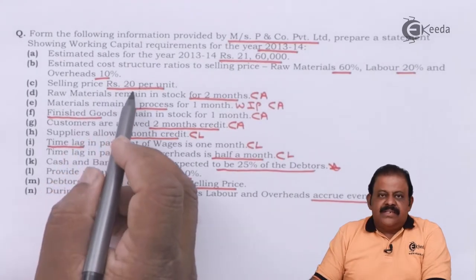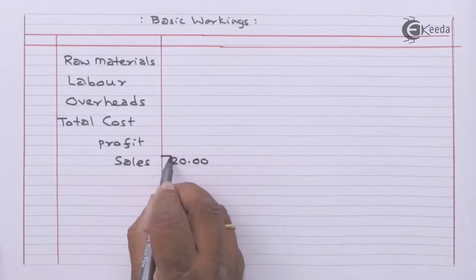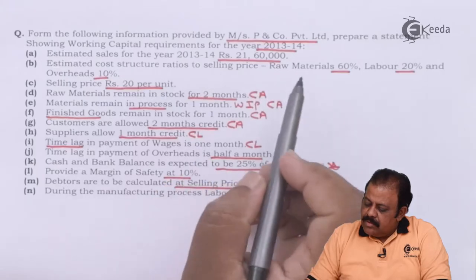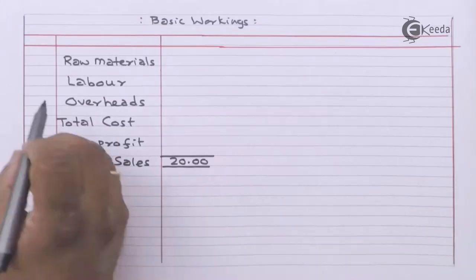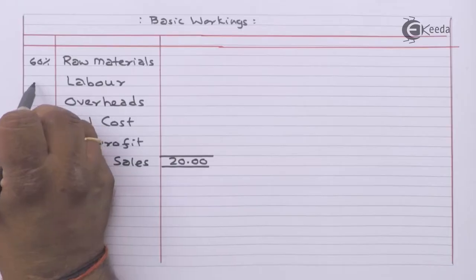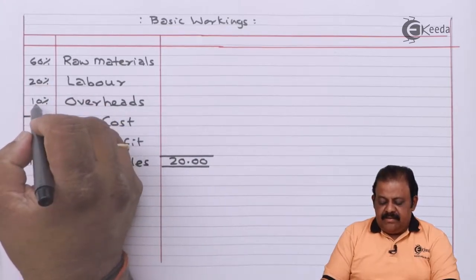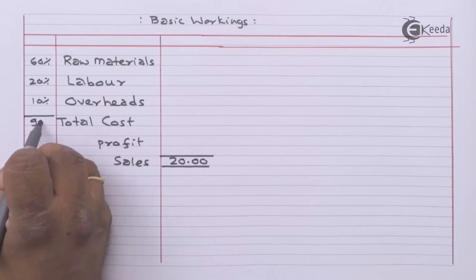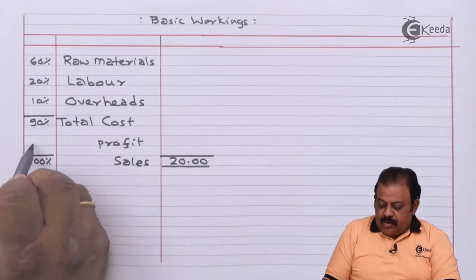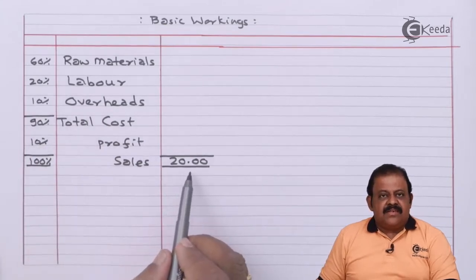Selling price is rupees 20 per unit, which we take as 100%. Raw material is 60%, labour is 20%, overheads is 10%. So total cost is 90%, giving a profit of 10%. All calculations will be done on the selling price of rupees 20.